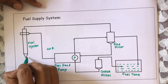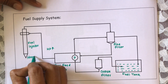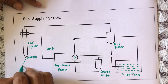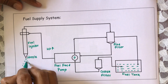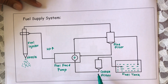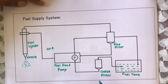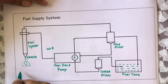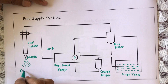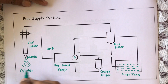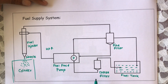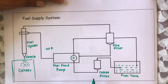Through the fuel feed pump, high pressure fuel will be supplied to the fuel injector. Through this nozzle, we are going to inject the fuel wherever there is a requirement and in whatever quantity is required. You might have understood how the fuel flows from the fuel tank towards the injector and ultimately inside the cylinder.